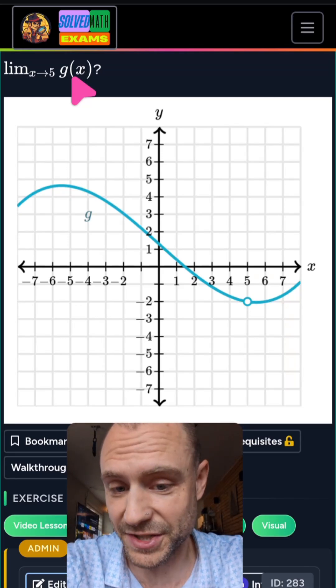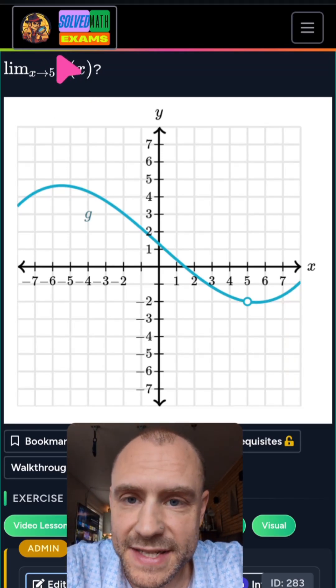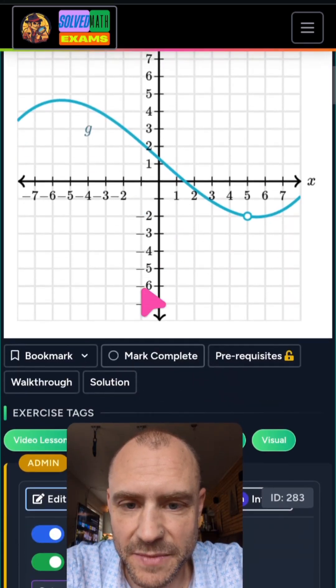There's a hidden question here when they say, what is the limit as x approaches 5? Notice how there's no plus sign and no minus sign here. And I'm going to show you in the walkthrough.